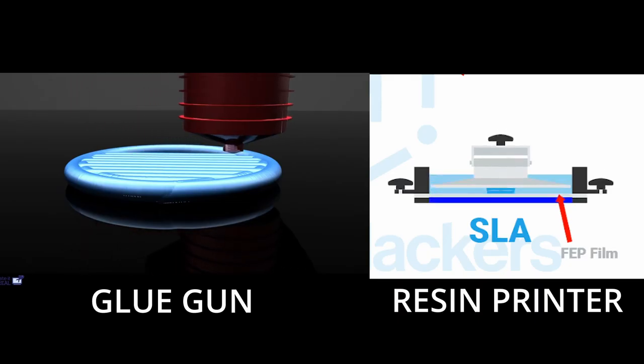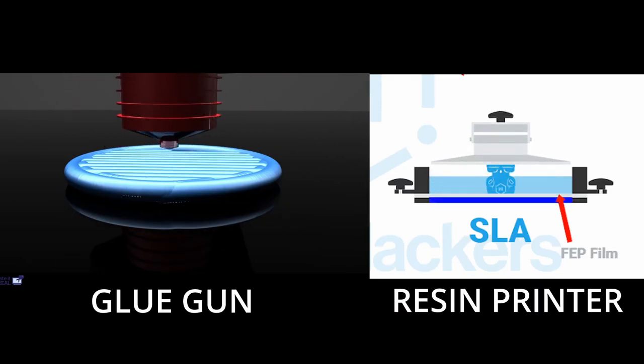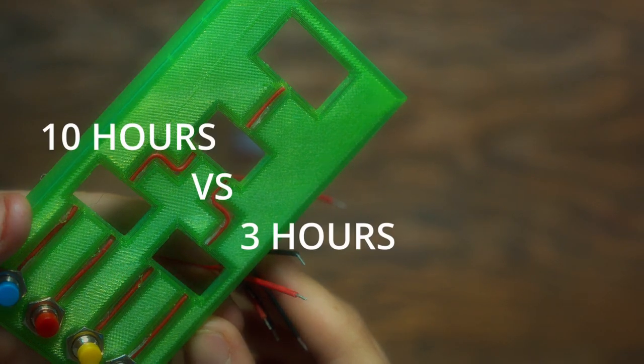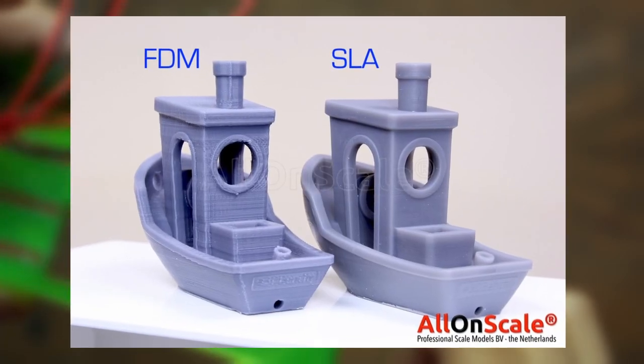This method lets us print a whole layer at a time, instead of one point at a time, layer by layer. So something as simple as this will take us a quarter of the time to print on our resin printer, all while maintaining that crazy resolution.